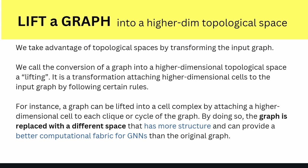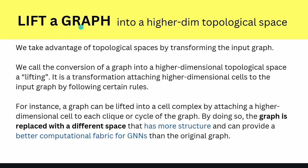Let's start at the beginning. What we want to do is take advantage of more complex, powerful topological spaces by transforming our input graph. We do the rewiring from GraphSAGE to GUT. But what we want to do now is something we call a lift — lifting a graph into a higher dimensional topological space. It is a transformation attaching higher dimensional cells to the input graph by following certain rules. For instance, a graph can be lifted into a cell complex or simplicial complex by attaching a higher dimensional cell to each clique or cycle of the graph.